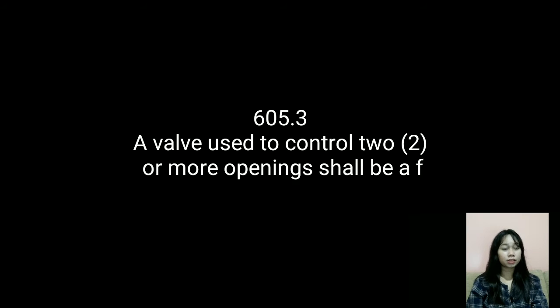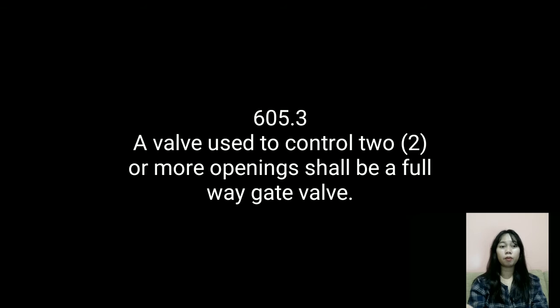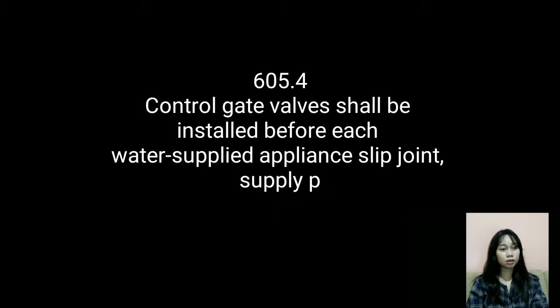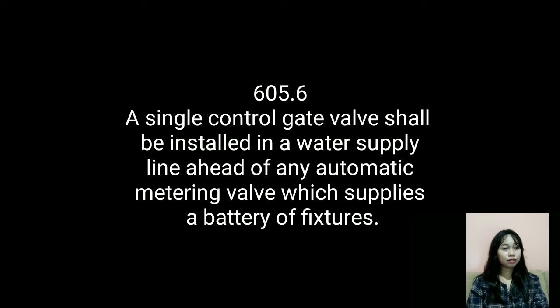In Section 605.3, a valve used to control two or more openings shall be a full-way gate valve. In Section 605.4, a control gate valve shall be installed before each water-supplied appliance and slip-joint supply pipings for non-metallic fixtures. In Section 605.5, all required shut-off or control valves shall be accessible in all buildings. In Section 605.6, a single control gate valve shall be installed in a water supply line ahead of an automatic metering valve which supplies a battery of fixtures.